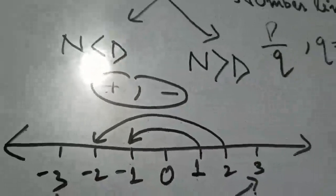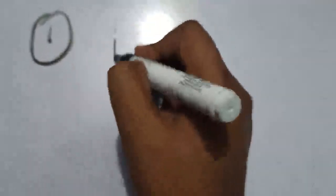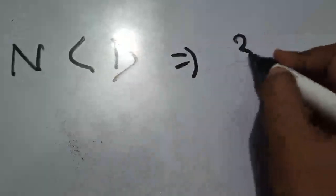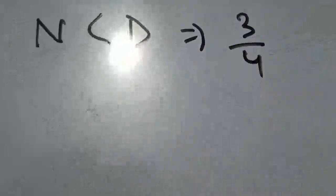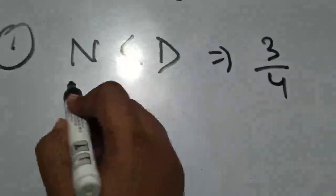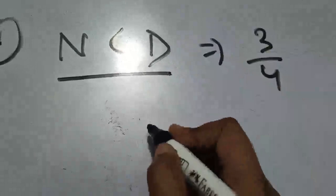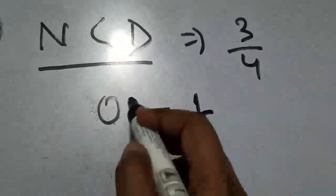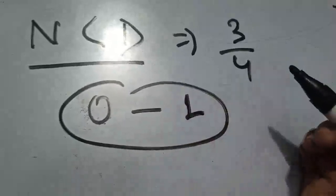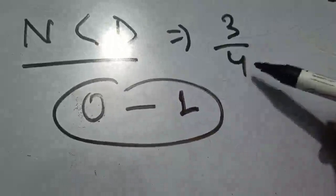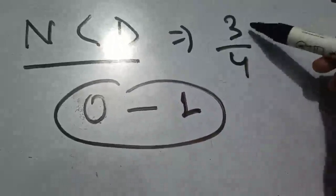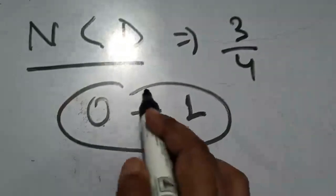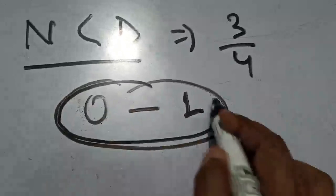Now let's look at the cases and everything will be clear. The first condition is where the numerator is smaller than the denominator. For example, 3 by 4. What you need to remember is: when the numerator is smaller than the denominator, the value will lie between 0 and 1. If we divide it, 0-point-something will come. So whenever the numerator is smaller than the denominator, that value lies between 0 and 1.